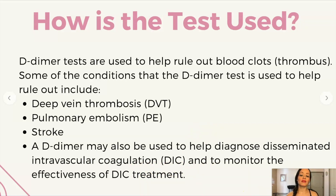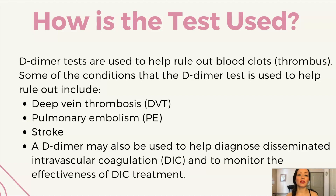With disseminated intravascular coagulation, it's a very sad condition. Due to some kind of trauma or other process, these individuals will start forming tiny clots in the body, and then because they use up all of their body's clotting factors, they end up bleeding very easily. They will have bruises on their extremities, they may bleed from the nose, from the gums when brushing their teeth, from an IV site, and they may bleed internally — so it's a very dangerous condition.